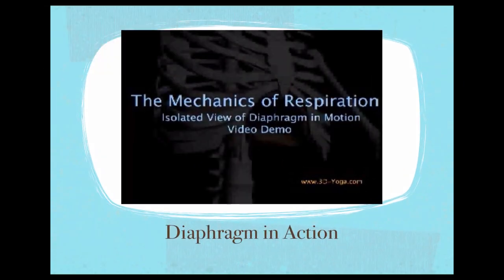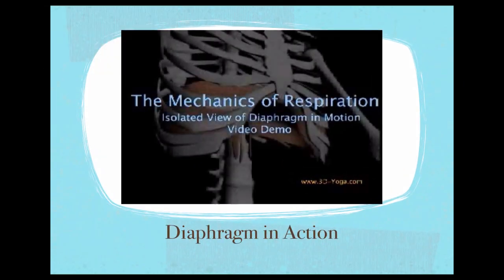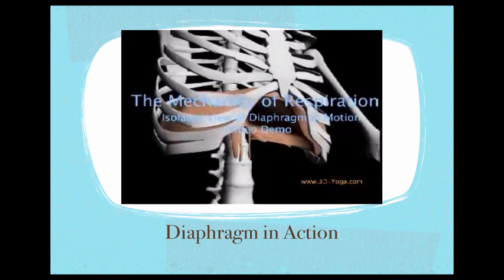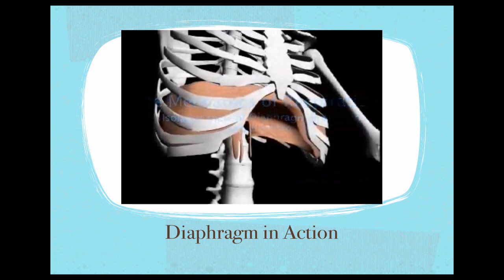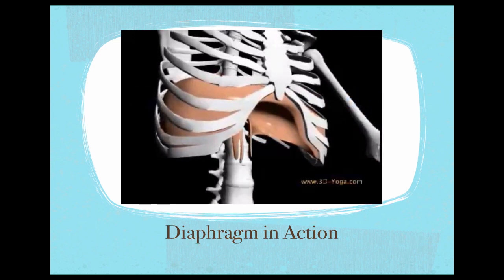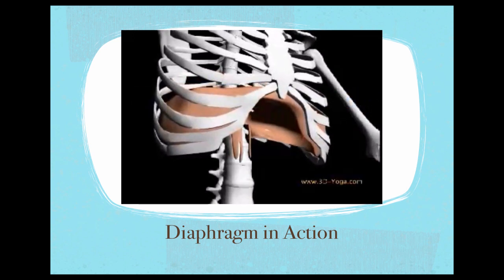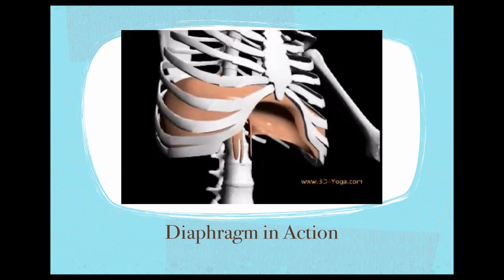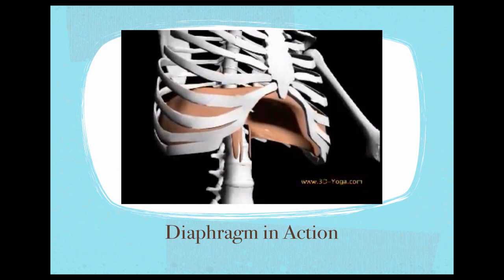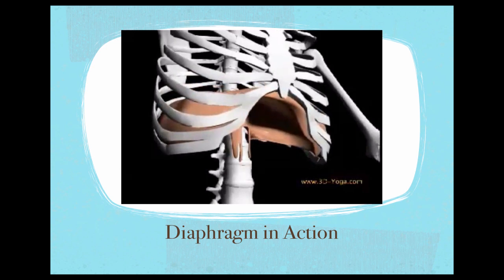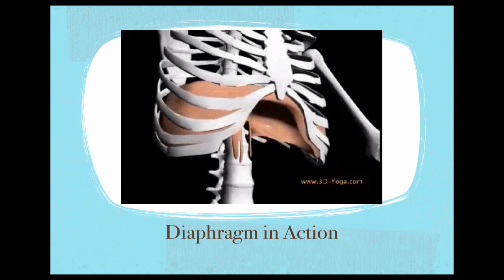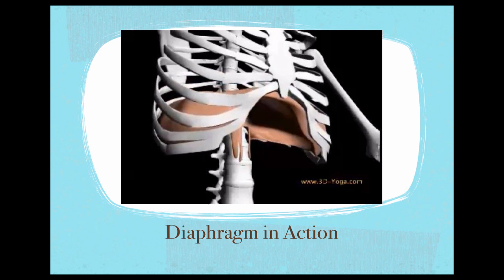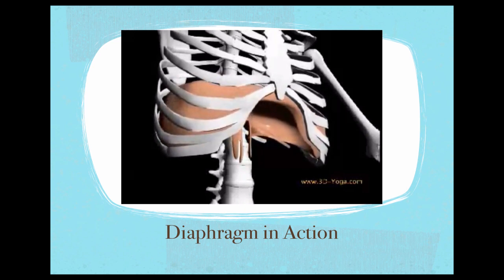The primary muscle of respiration is the diaphragm. The diaphragm is a thin, dome-shaped layer of muscle and tendon that separates the abdominal cavity from the chest cavity. It gains its shape from its attachments and from the organs that surround it, especially the heart, lungs, and liver.